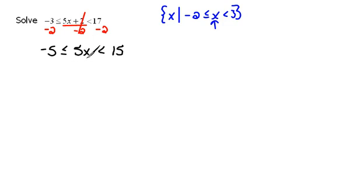Now, here again, we want x alone in the center. We don't want 5x. So rather than multiply by 5, the opposite of that would be to divide everything by 5. So now on the left, we'd have negative 1 is less than or equal to x is less than 15 divided by 5 would be 3. This is our new compound inequality.